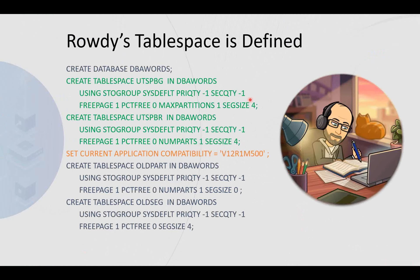If you really wanted to, you can still create old-fashioned non-UTS table spaces — segmented or partitioned — but you must set the current application compatibility first to V12 R1 M500. This would be segmented; this is old-style partitioned; this is old-style non-partitioned but segmented. For this presentation we'll use a UTS PBG, partitioned by growth.